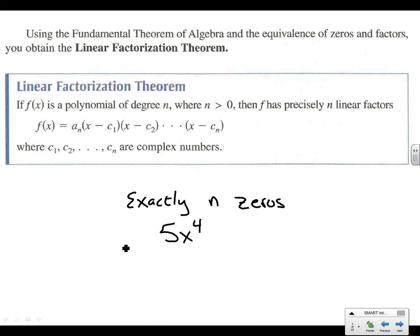So if we have 5x to the fourth plus a whole bunch of stuff, we're going to have four zeros. Some might be real, some might be imaginary, but we'll be able to get exactly 4.